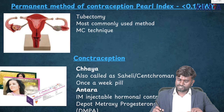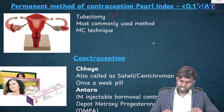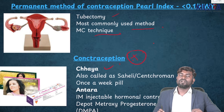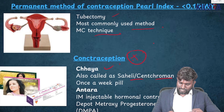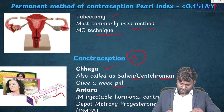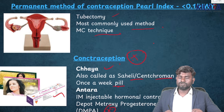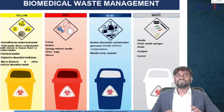The permanent method of contraception where the Pearl Index is less than 0.1 per 100 women per year is going to be tubectomy — the most commonly used method. Also remember Chhaya, also called Centchroman — it is a once-a-week pill. Antara is IM injectable hormonal contraception which has depot medroxyprogesterone acetate (DMPA).